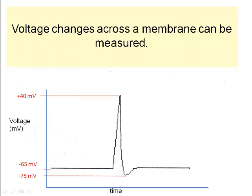We can measure voltage changes as a wave of depolarization passes a certain point along the neuron. In this image, we follow the voltage changes along the first part of the neuron.